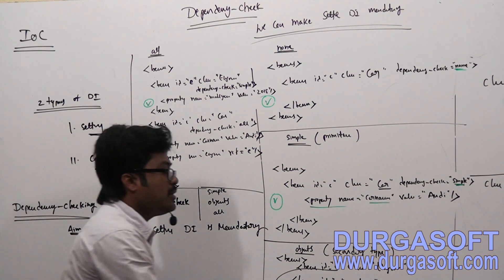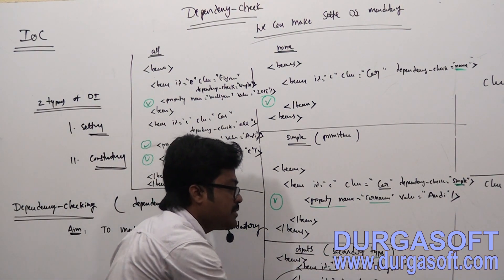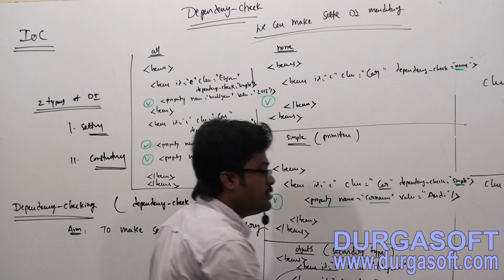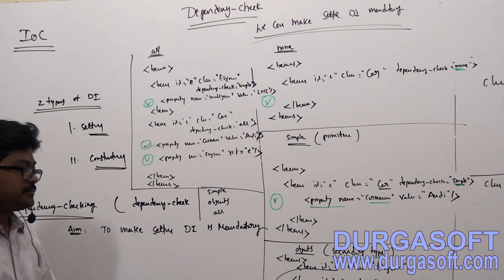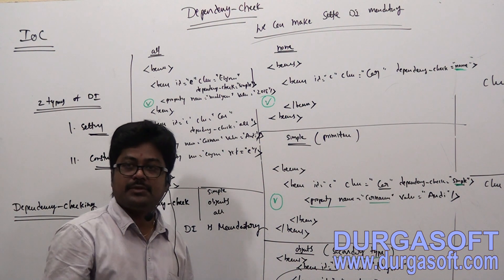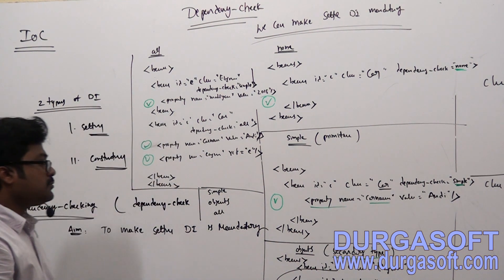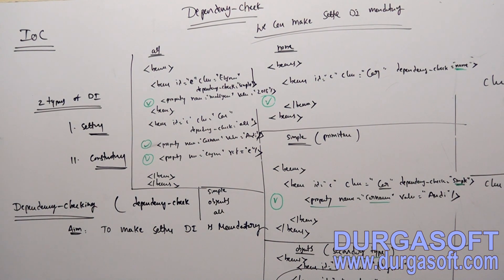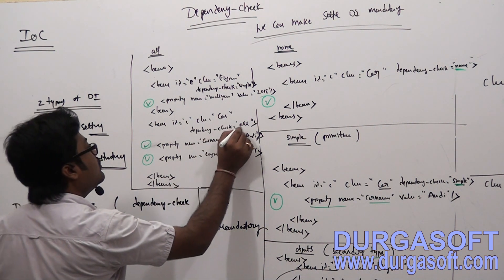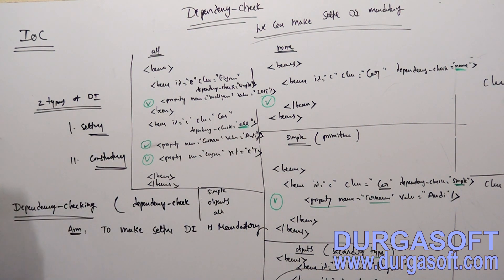If you want to make setter dependency injection for secondary data types mandatory, you can apply dependency-check with value 'objects'. If you apply 'objects', then it is mandatory to inject secondary data types. If you want to make both primitive setter and secondary type setter methods mandatory, you can use 'all'.